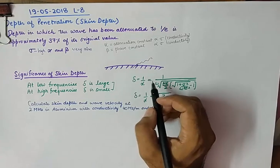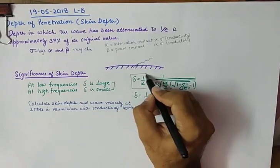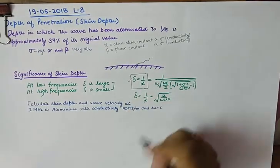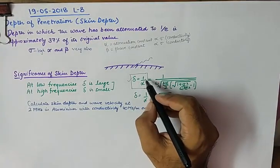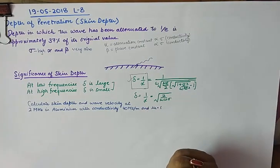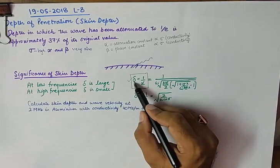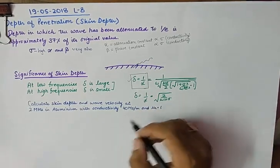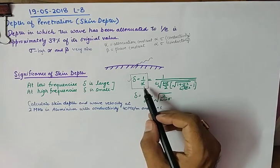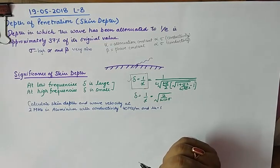Now, coming to the formula for skin depth, skin depth is denoted by delta, and it is equivalent to 1 upon alpha. The more the attenuation, the lesser it can penetrate. It's as simple as that. The lesser the attenuation, the more it can penetrate into the medium.